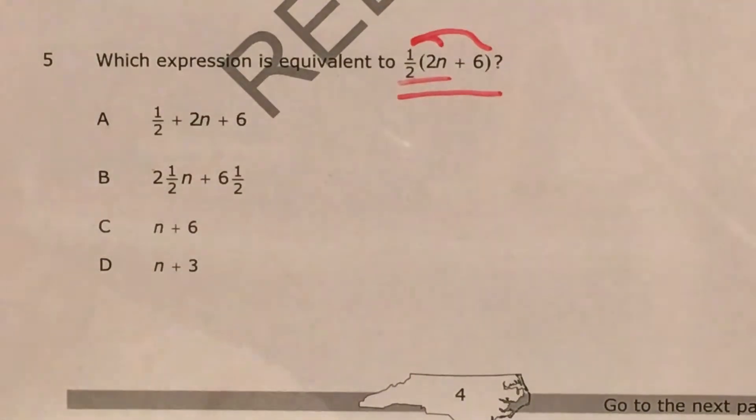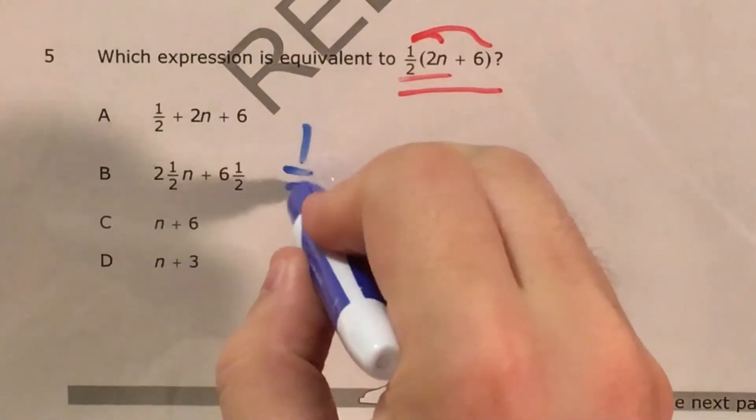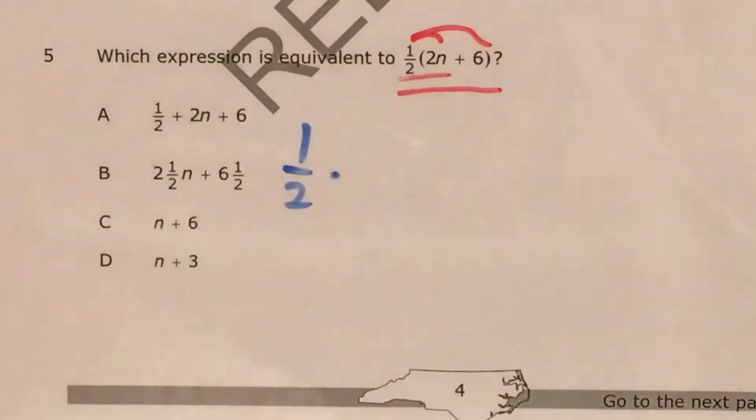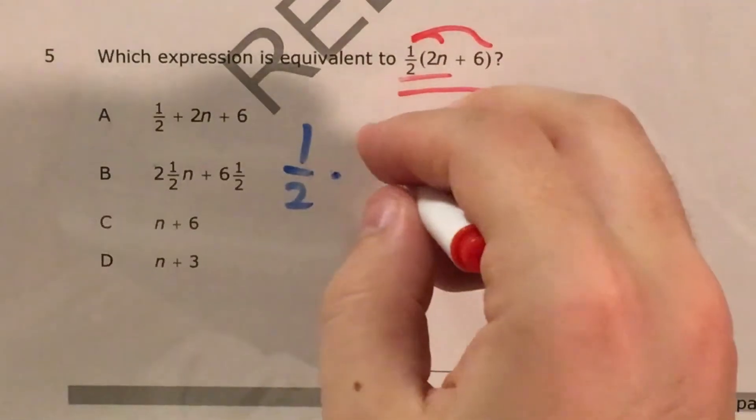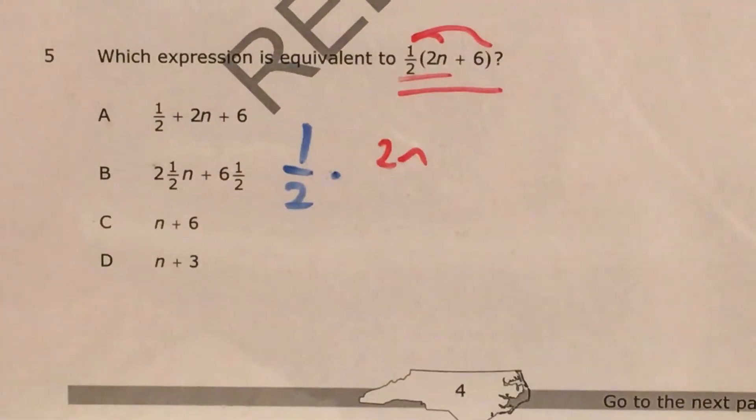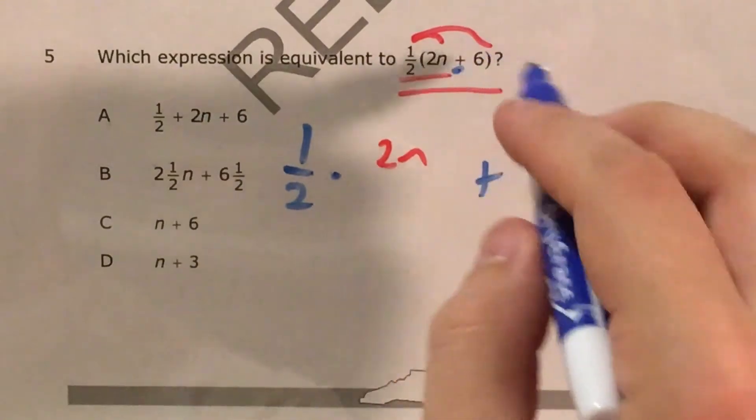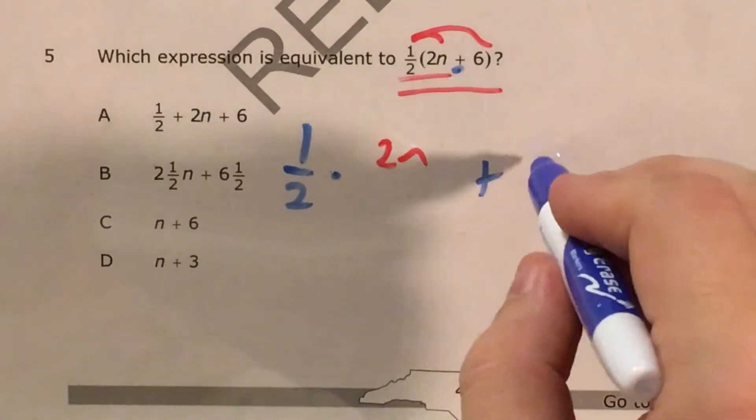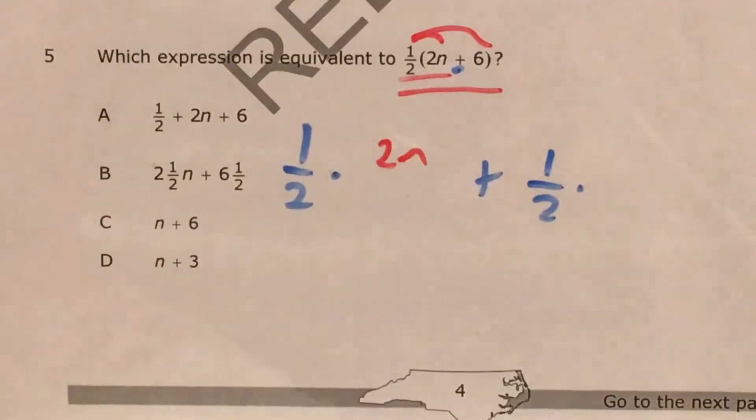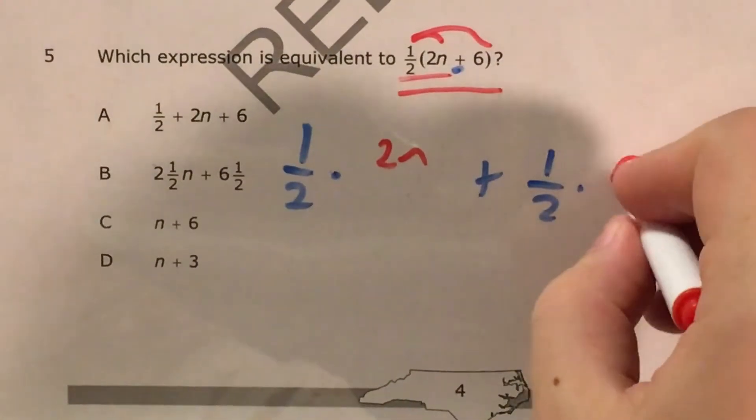That's 1 half times 2n. And I know there's going to be a plus in the middle, because there was a plus in the middle in my parentheses, plus whatever 1 half times 6 is.